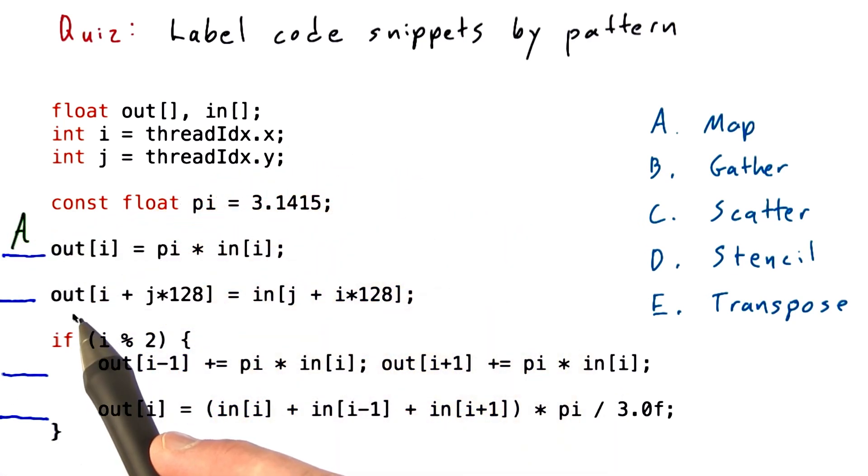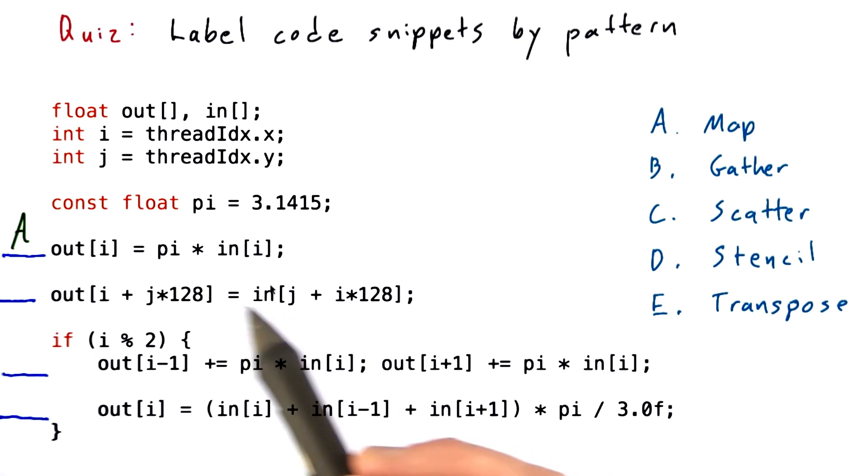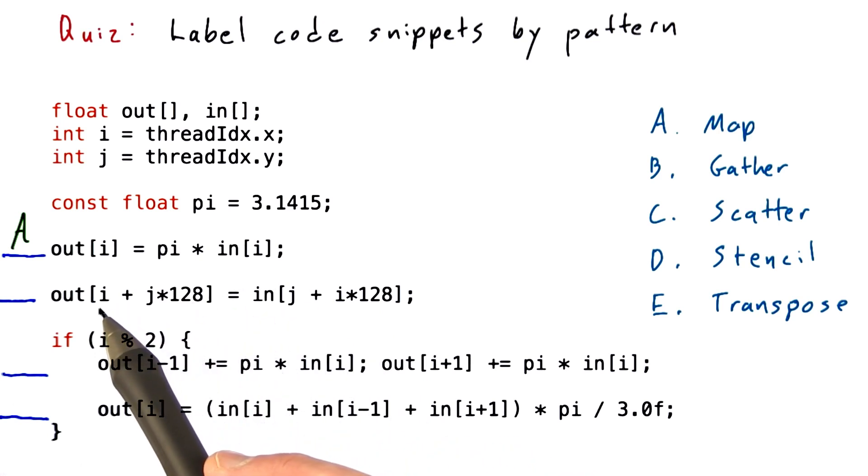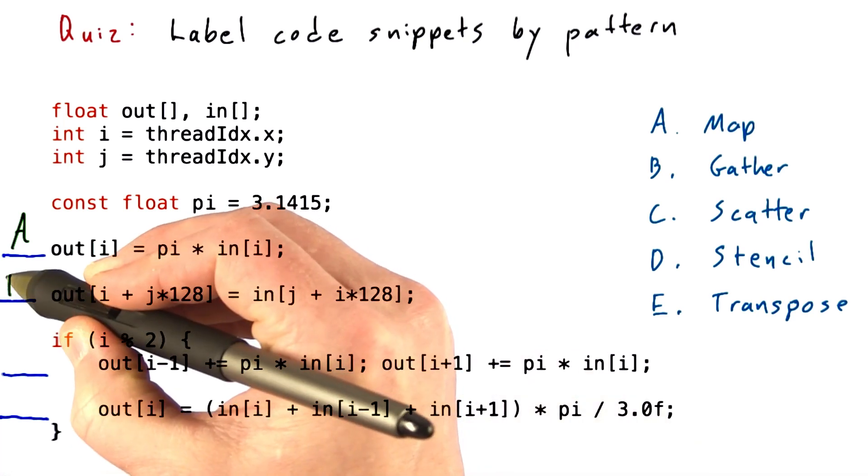Now this next one is also a one-to-one operation. One value gets written in the output array, corresponding to every value that gets read from the input array. And you can see that we're writing into an array, which is represented in I major order here in the output, and in J major order in the input. So this is a transpose operation.